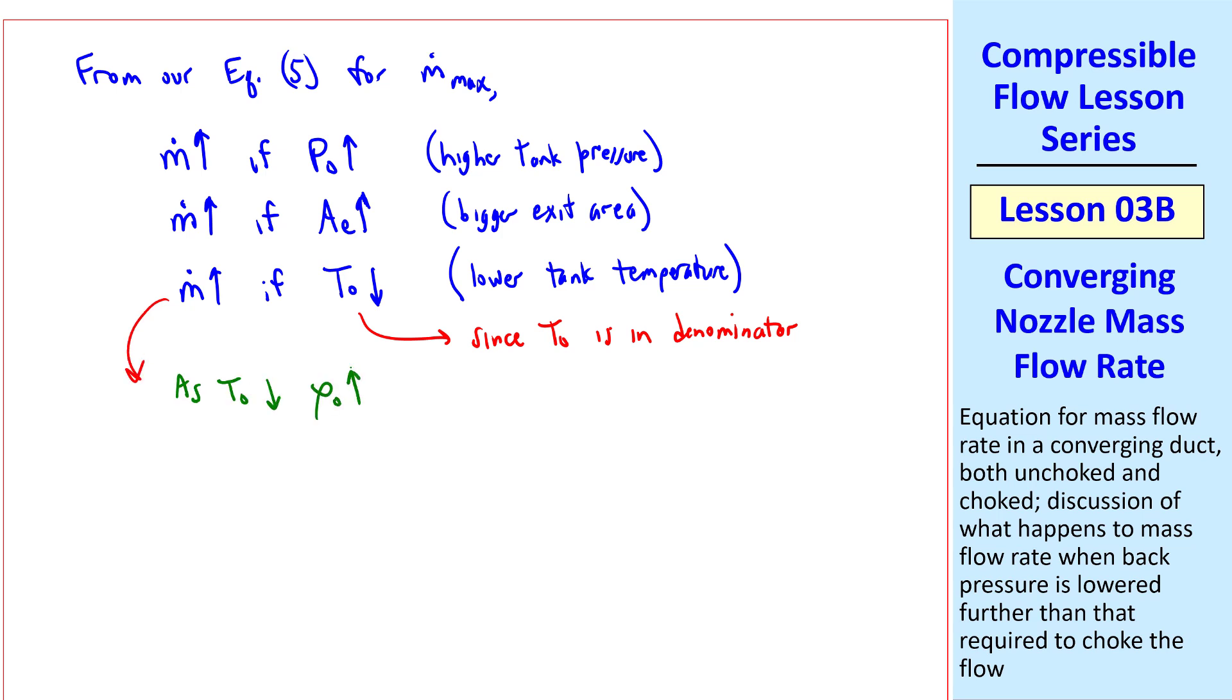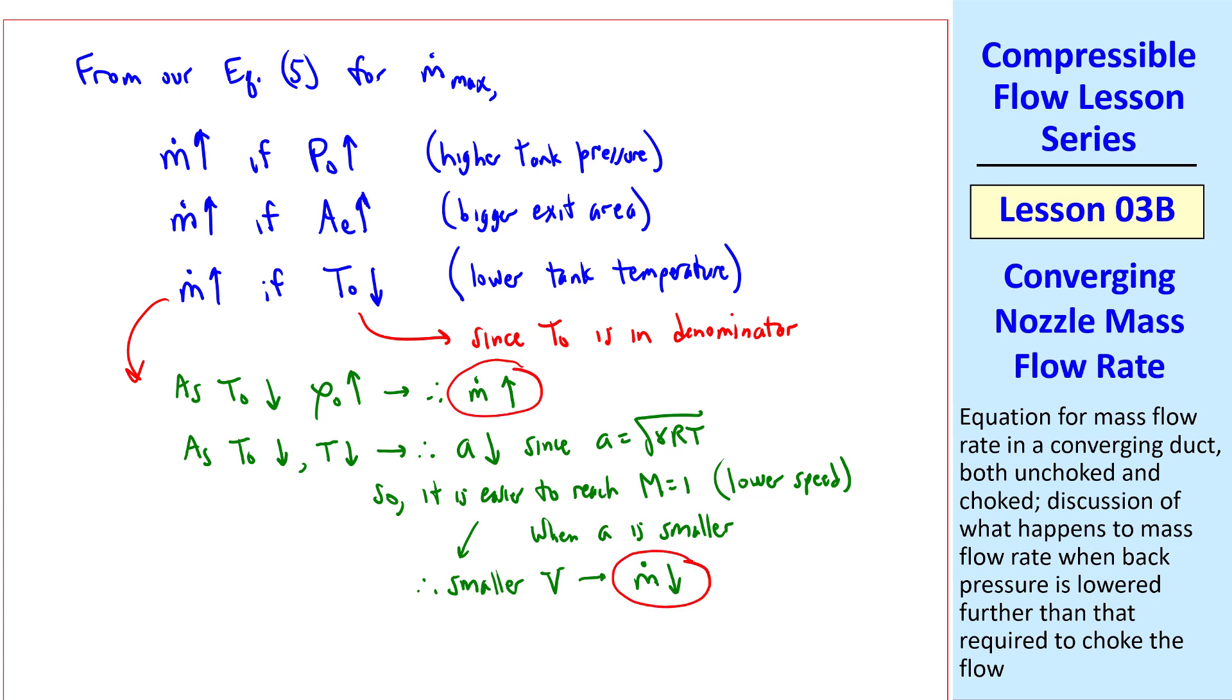Well, as T₀ goes down, ρ₀ goes up if all else is the same, and if there's a bigger density, m-dot would go up. But as T₀ goes down, T itself goes down by our ratios, and therefore speed of sound goes down, since A is the square root of γRT. So we can think about this: at a smaller speed of sound, it is easier to reach sonic conditions. In other words, at a lower speed when the speed of sound is smaller. All this to say that we have a smaller V, which makes mass flow rate go down. These are competing effects. The increase in density causes m-dot to go up, but the decrease in temperature, speed of sound, and therefore V, causes m-dot to go down. Well, this one wins. m-dot does go up when T₀ goes down.